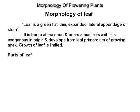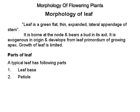Parts of a leaf. A typical leaf has the following parts: leaf base, petiole, and leaf blade or lamina.